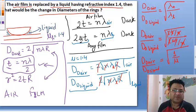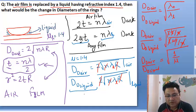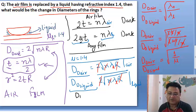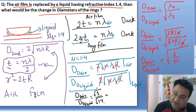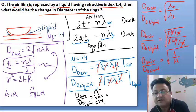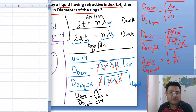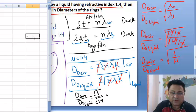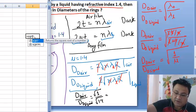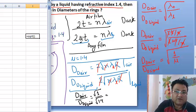Diameter of dark ring in liquid is equal to diameter in air divided by under root of 1.4. I am going to write this calculation.